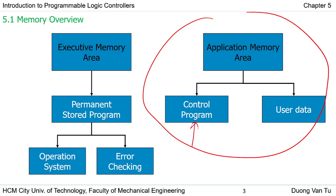When you use the PLC, you just see the application memory area, and we prepare the control program according to your application and its procedures. Then you make the control program and download it to the PLC. For user data, you can use the memory in the PLC — it looks like a partition on your computer or mobile phone.